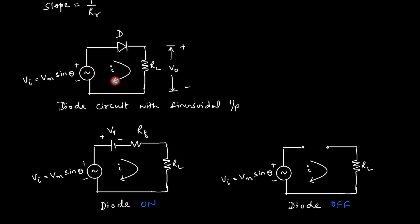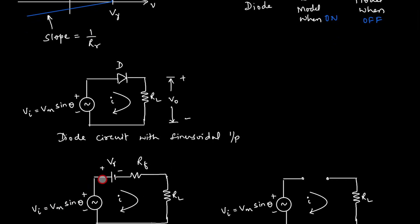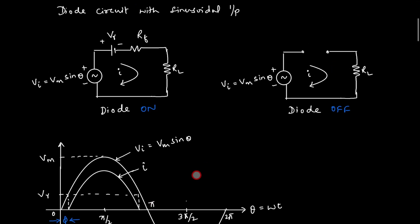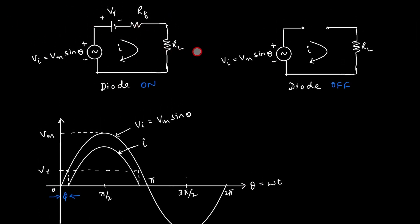Now let us use this model in the analysis of a simple diode circuit with a sinusoidal input. We have an input and we observe the output. When the diode is ON, it is replaced by this model. When it is OFF, it is totally an open circuit. To find the current, we always apply Kirchhoff's Voltage Law. Starting from this point: source to ground it is V_i minus V_gamma.